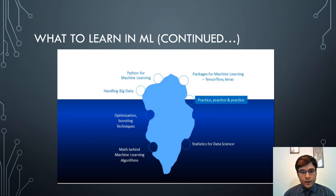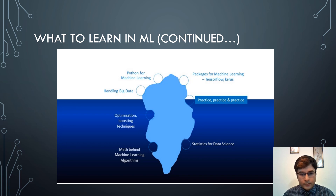A more detailed breakdown of what to learn in ML: for programming and tools, you need to learn Python for ML, handling big data, and packages for ML such as TensorFlow and Keras. For the math behind machine learning, you need to learn optimization, boosting techniques, the math behind ML algorithms, and statistics for data science. Practice is required extensively in both areas.